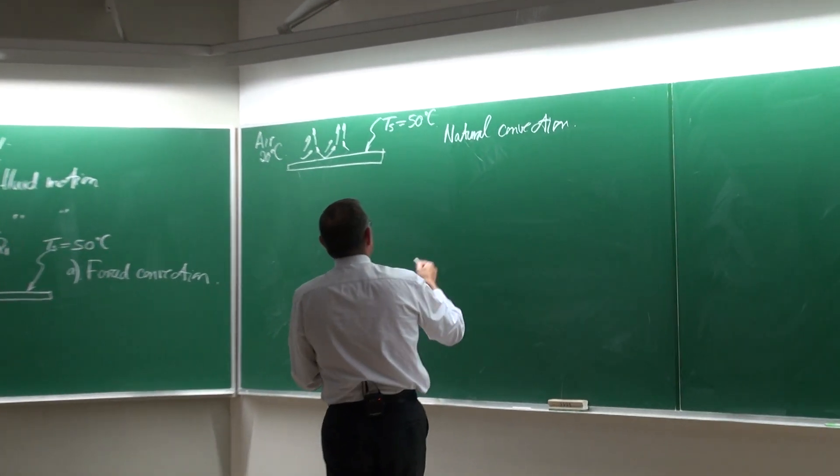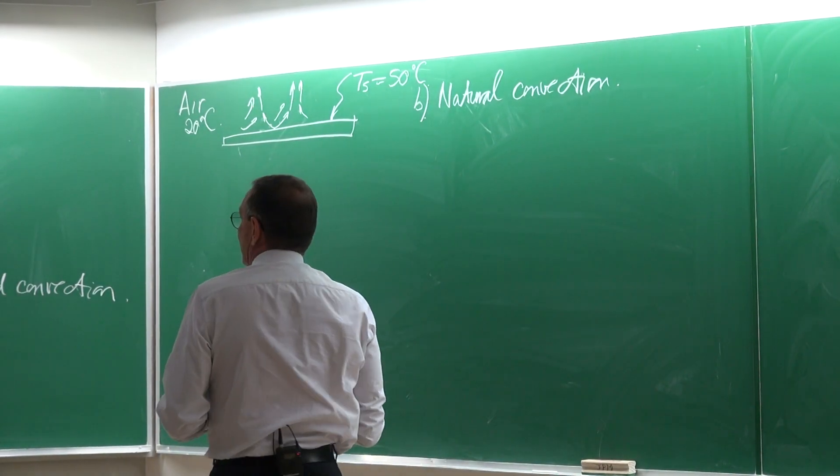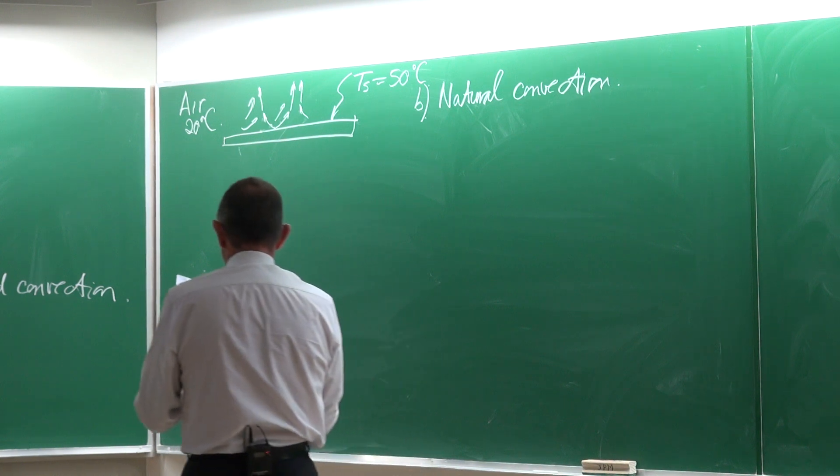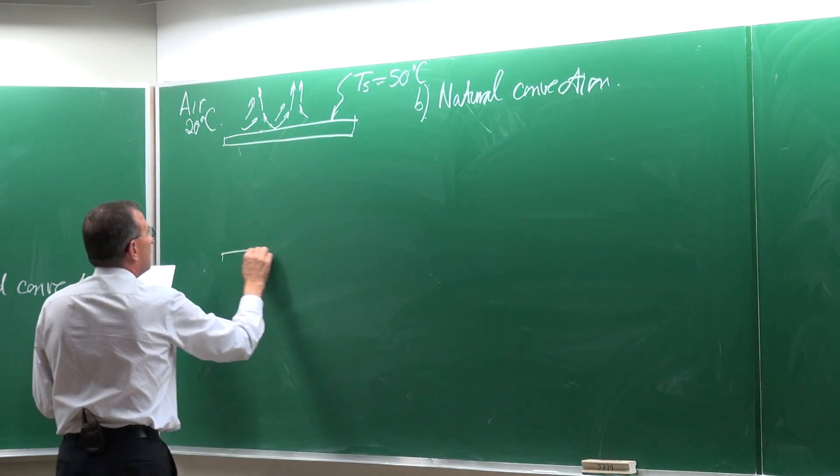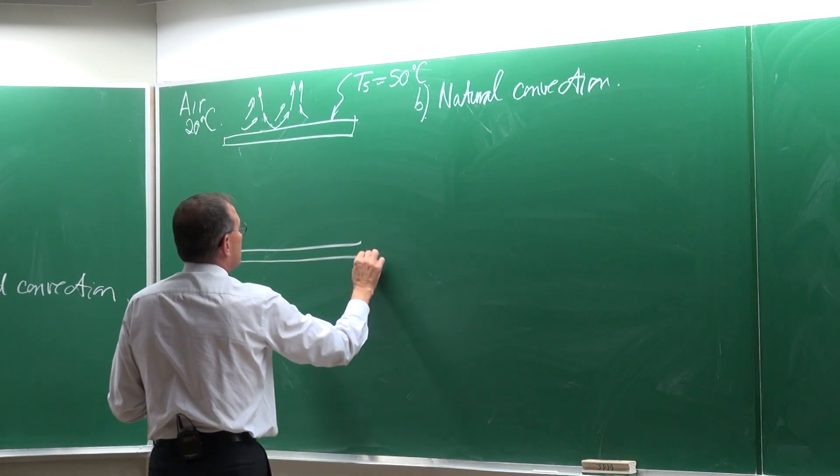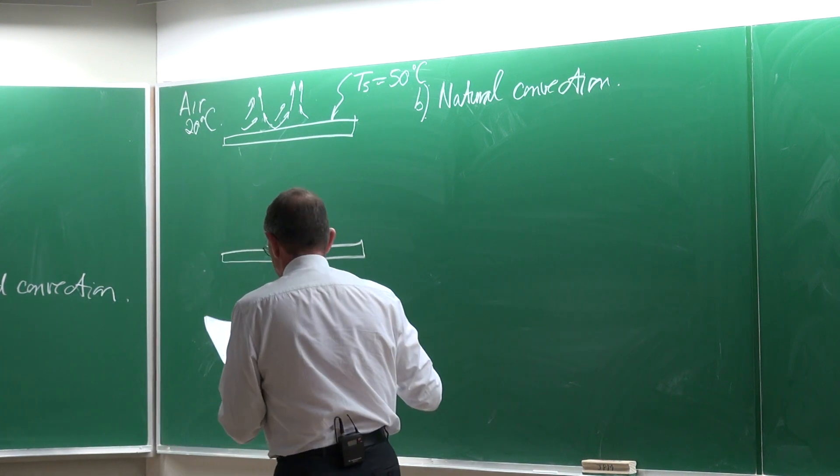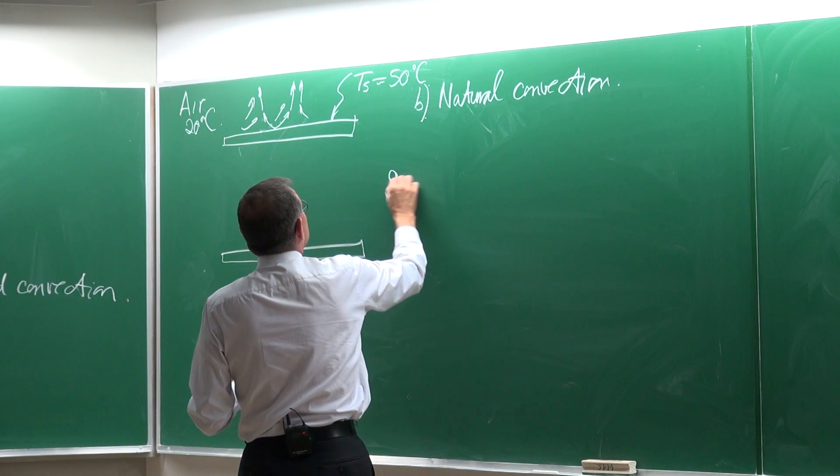So that is the next type of fluid motion. And the last one would again be there's no fan or anything but G is equal to zero.